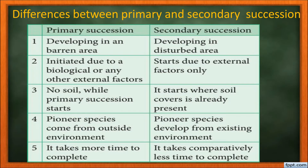Differences between primary and secondary succession: primary succession takes place in barren land; secondary succession takes place in a disturbed area. Primary succession is initiated by biological and external factors; secondary succession happens due to external factors only. Primary succession starts where there is little soil, while secondary succession starts where soil cover is already present. Pioneer species in primary succession come from outside the environment, whereas in secondary succession they may develop from the existing environment. Primary succession takes more time to complete; secondary succession takes comparatively less time.